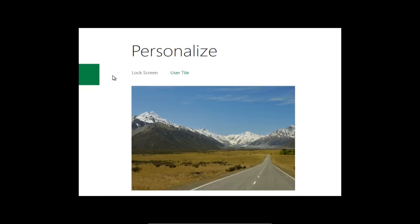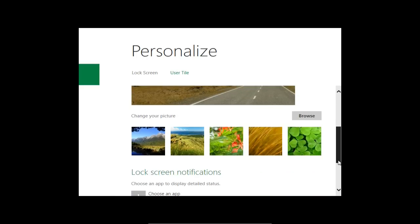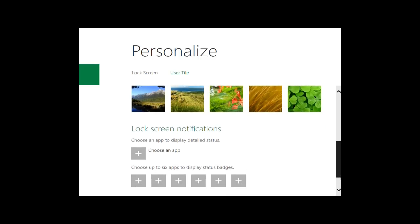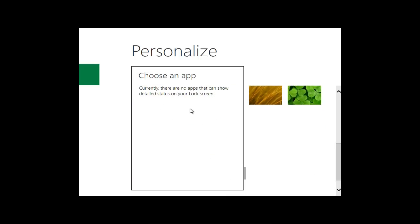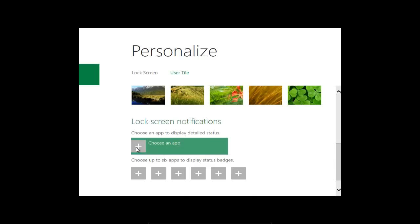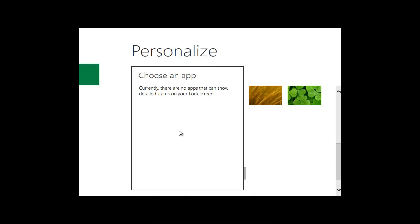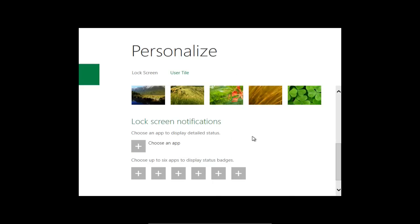Zurückkomme ich - ihr seht, es gibt keinen Zurück-Button. Zurück kommt man, wie vom Touchscreen gewohnt, wenn man an die Seite klickt, dann ist das weg. Für die, die kein Android oder iOS auf dem Touchscreen benutzt haben, wird das vielleicht schwierig vorkommen. Es gibt keinen Close-Button, keinen Schließen-Button, sondern man klickt einfach an die Seite und dann ist das weg.